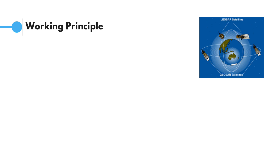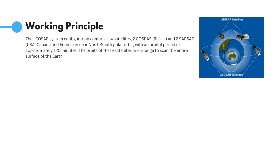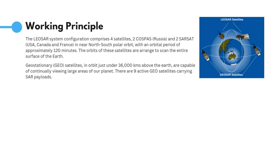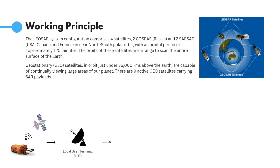There are two types of satellites orbiting the earth — low earth orbiting and geostationary satellites — which are used with different complementary capabilities. The signal is partially processed and stored in these satellites and then relayed to ground stations known as local user terminals. Further deciphering of the signal takes place at the local user terminals and appropriate search and rescue operations are notified through mission control centers set up for this purpose.